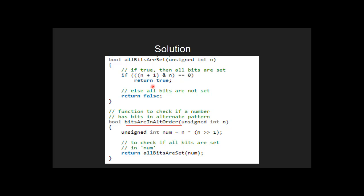If it equals 0, we return true indicating all the bits are set and hence the number has bits in alternate pattern. Else we return false indicating the number does not have all bits set and hence does not have bits in alternate pattern. Thank you for watching. Please leave us your likes and comments.